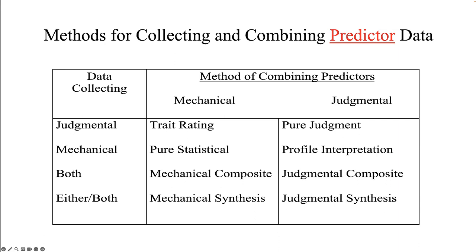Combining data in a mechanical manner means no human judgment is used in combining or interpreting the data. For example, a multiple regression equation can be developed from existing data that mechanically weights the various predictor scores into a best-fit combination. Combining data in a judgmental manner means decision makers use their judgment — their gut or intuition — when making the hiring decision. For example, a hiring manager can eyeball a set of applicant files and use expertise to choose the best candidate.